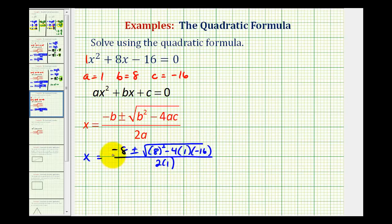And now we'll start to simplify. We'll have x equals negative 8 plus or minus the square root of 8 squared is 64. And we can think of this as negative 4 times 1 times negative 16, which would be positive 64. So we have plus 64, all over 2 times 1, which is equal to 2.